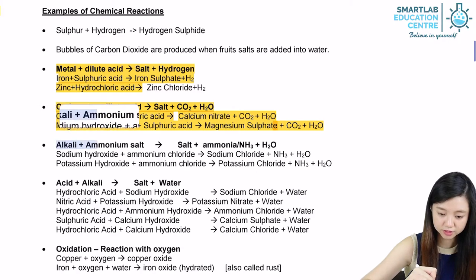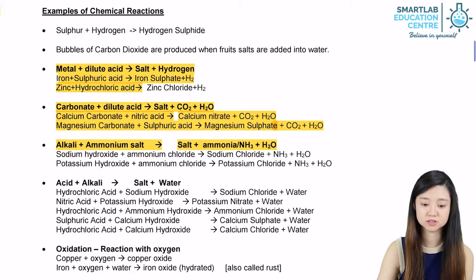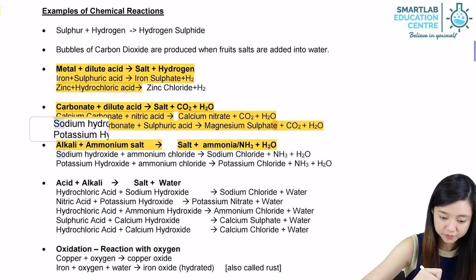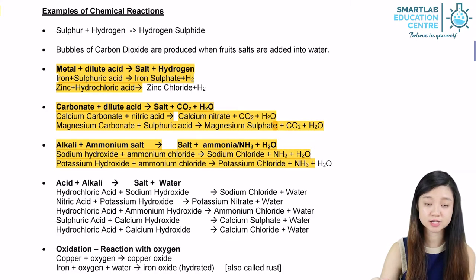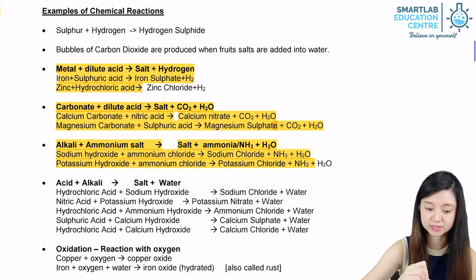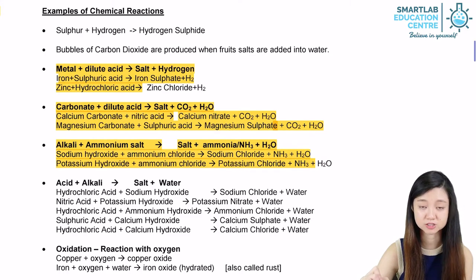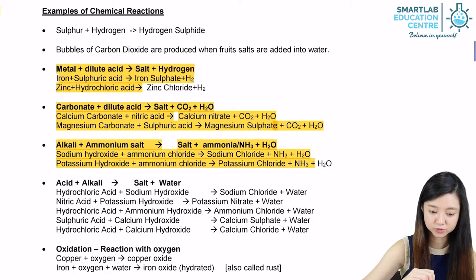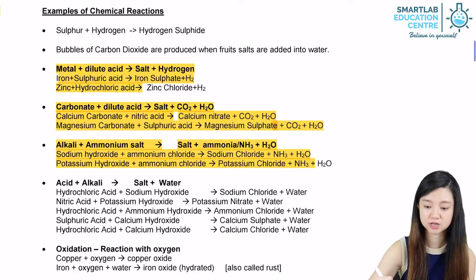The third general equation to remember is: alkaline plus ammonium salt gives you a salt plus ammonia plus water. For example, sodium hydroxide plus ammonium chloride gives sodium chloride plus ammonia plus water. Anything with hydroxide is an alkaline. Sodium chloride is the salt formed here. Another example: potassium hydroxide plus ammonium chloride gives potassium chloride plus ammonia plus water.